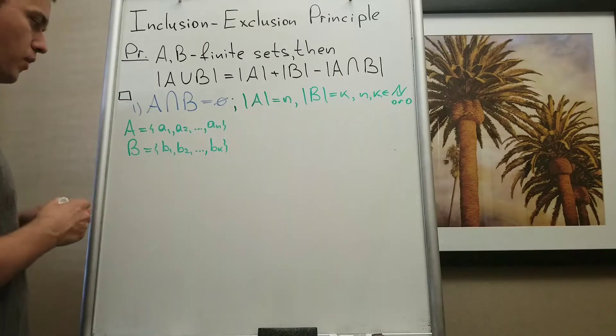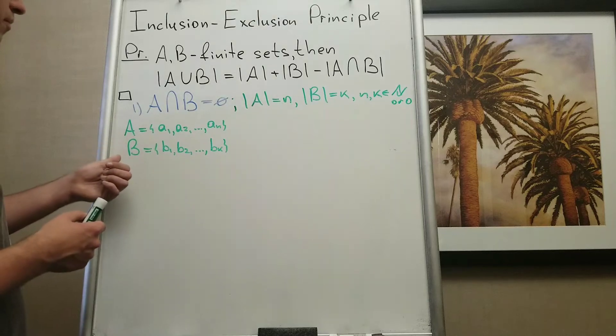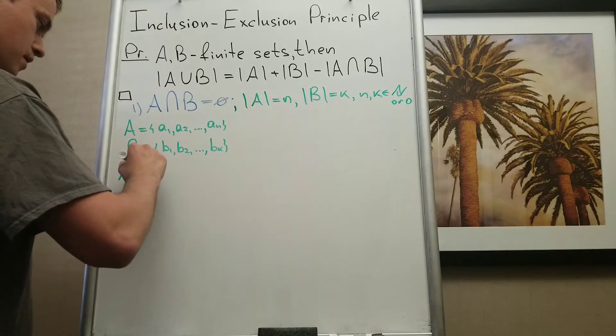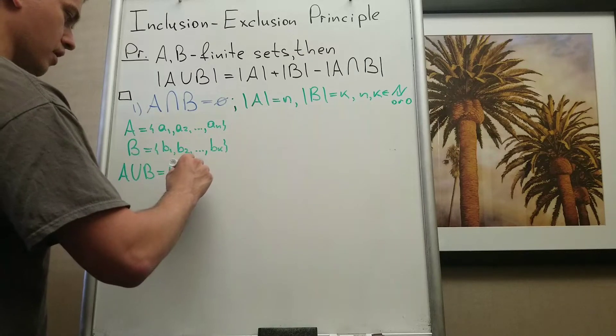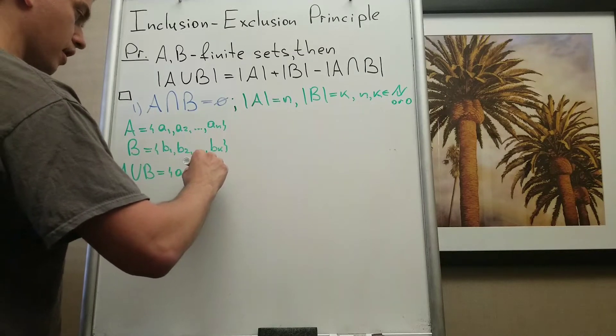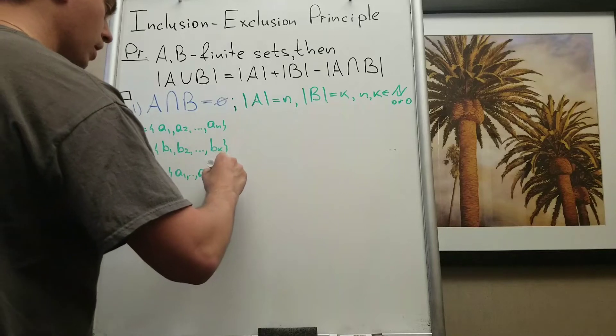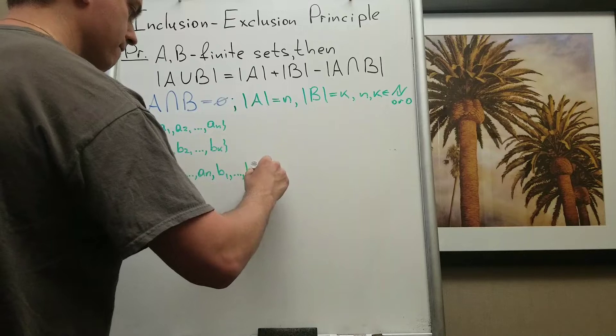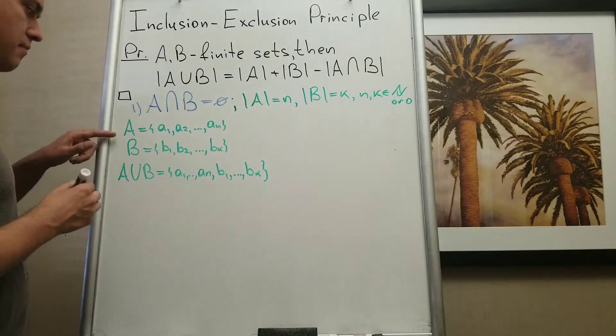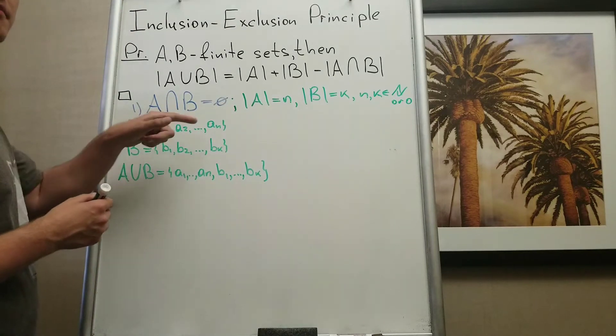And when we are going to take A union B, it's going to be clear that we will get the elements a1 up to an, then b1 up to bk. And since A and B are disjoint, there is no common element.